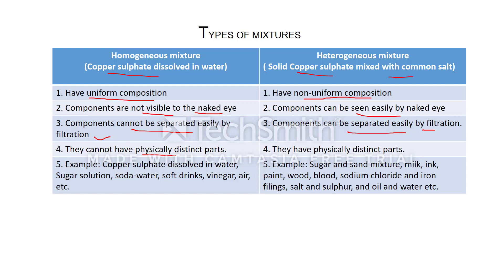Homogeneous mixtures cannot have physically distinct parts, while heterogeneous mixtures have physically distinct parts. Examples of homogeneous mixtures are copper sulfate dissolved in water, sugar solution, soda water, soft drinks, vinegar, air, etc. An example of a heterogeneous mixture is sugar and sand mixed together. Milk, ink, paint, wood, and blood are also heterogeneous mixtures. Other examples include a mixture of sodium chloride and iron filings, a mixture of salt and sulfur, and a mixture of oil and water.